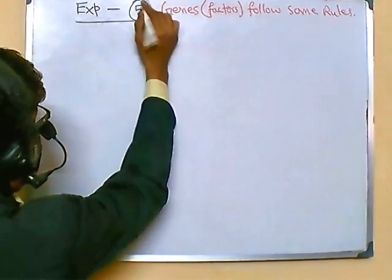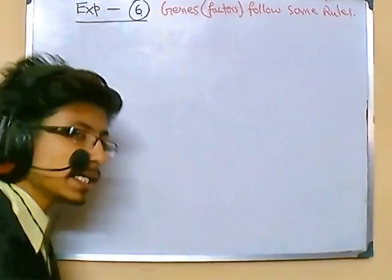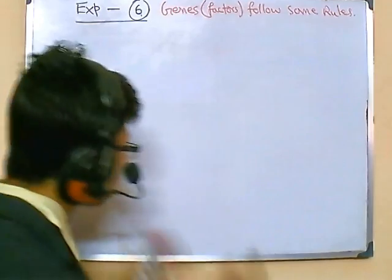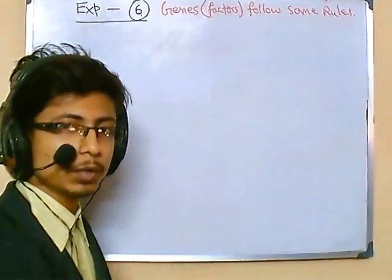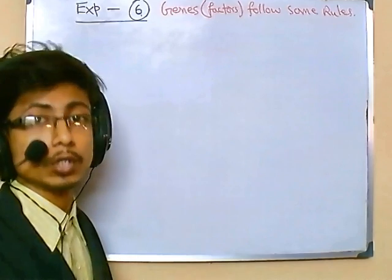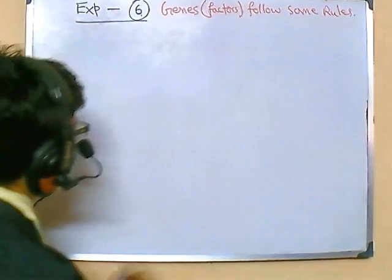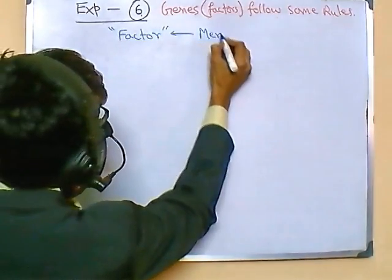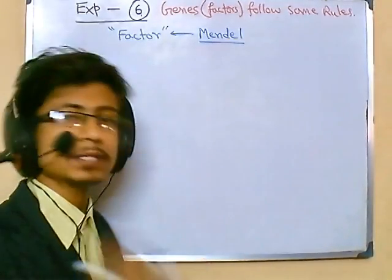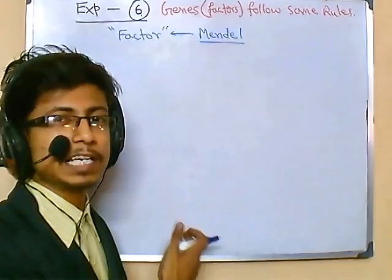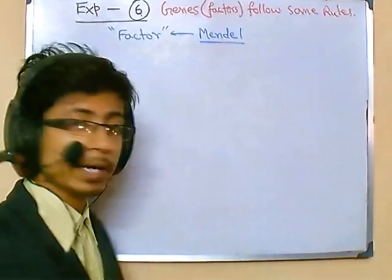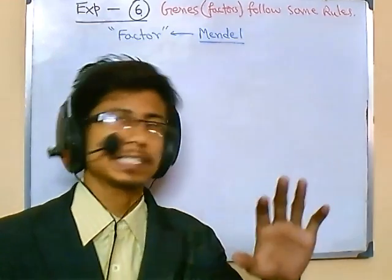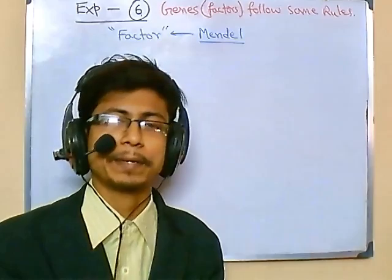Now we will be talking about experiment number six. In this experiment, people find out that yes, genes are real. Because during Mendel's time, people never knew whether the factors Mendel was proposing were true or not. After Mendel's experiments, we became somewhat sure that those factors have certain properties, as we have seen up to experiment five. But the question remained: where are these factors actually present? We need to find whether these factors are real.